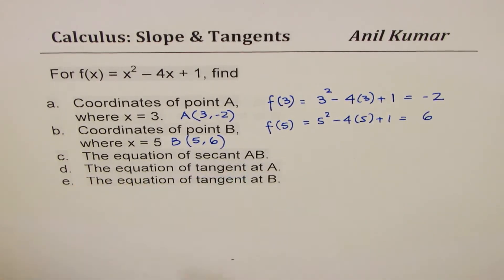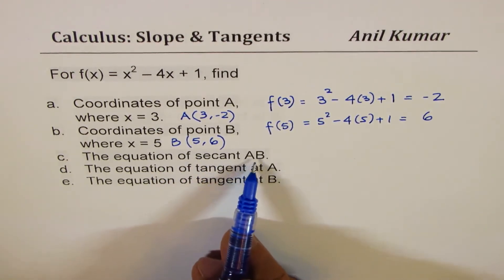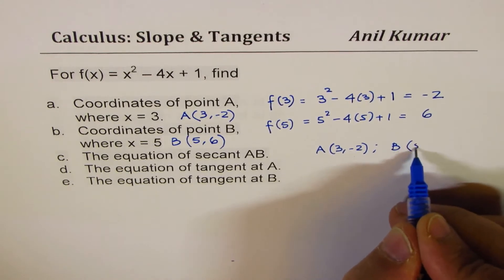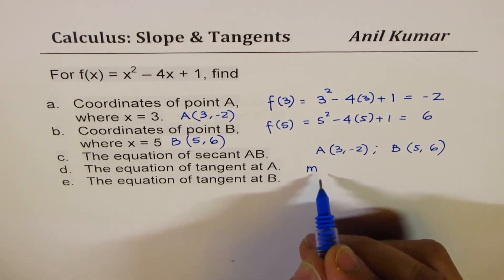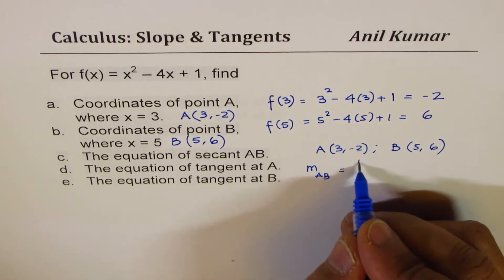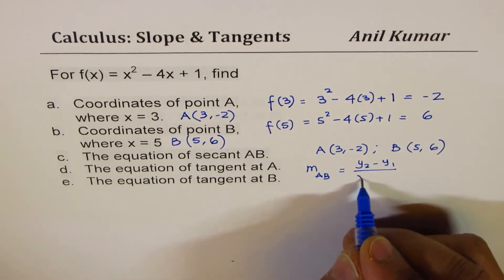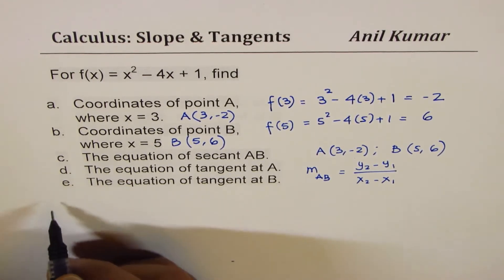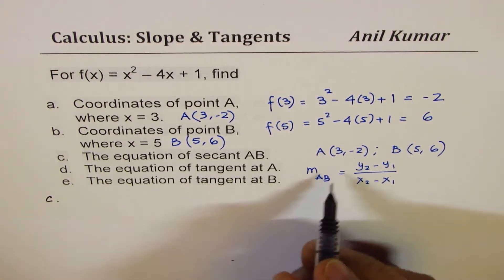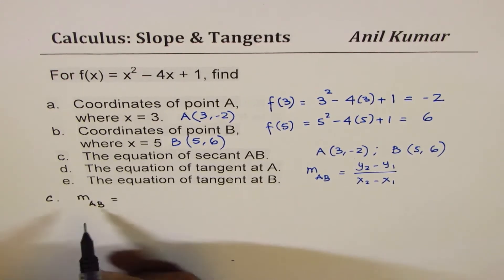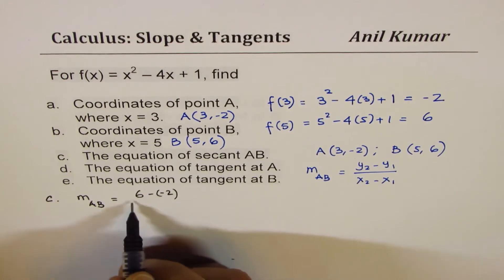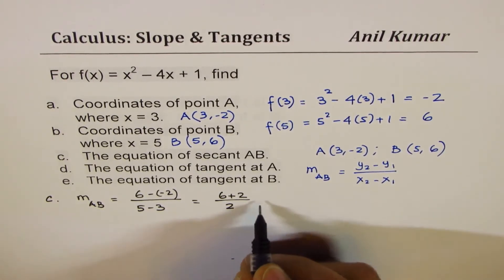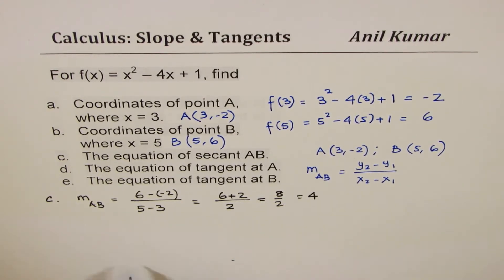Now we need to find the equation of secant AB. We have point A = (3, -2) and point B = (5, 6). The slope from A to B is (y₂ - y₁)/(x₂ - x₁) = (6 - (-2))/(5 - 3) = 8/2 = 4.